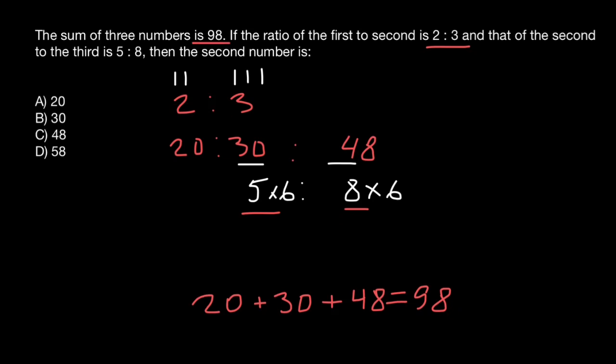Now, the most crucial part is to choose the correct answer. If you think it is 48, answer C, this is not true, because pay attention to the question. Then the second number is, so the question is about the second number. Here is the first number in the ratio. Here is the second. Here is the third. So our answer is 30.